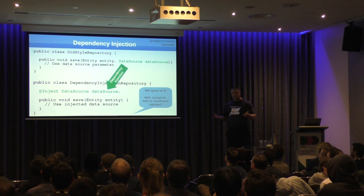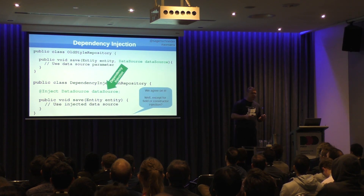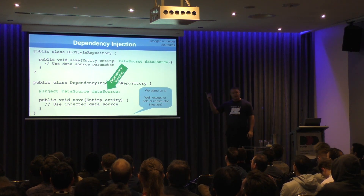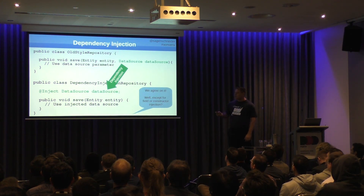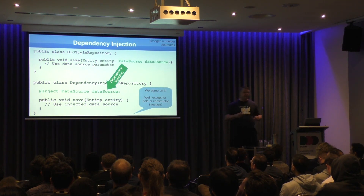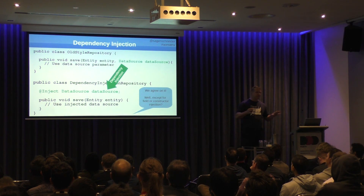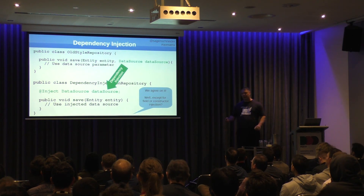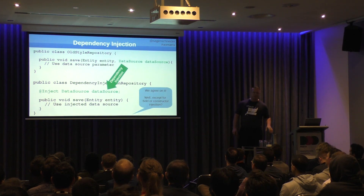Dependency injection — most people should probably know what that is in this room. We're effectively just taking a parameter and injecting it in there, which allows us to put in different implementations and manage our dependencies. You can do it in Spring, Unity, various other frameworks. You might disagree about constructor or field injection, but we can have healthy debates.